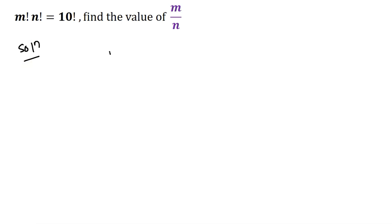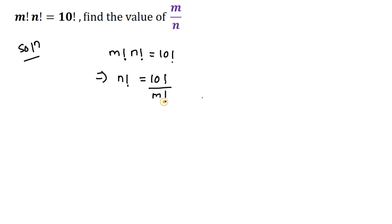We have given m factorial multiplied with n factorial equals to 10 factorial. In the next step, we can write n factorial equals to 10 factorial divided by m factorial. As we know that factorial means the product of all positive integers, so the value of m and n must be greater than 0 and must lie between 1 to 10.